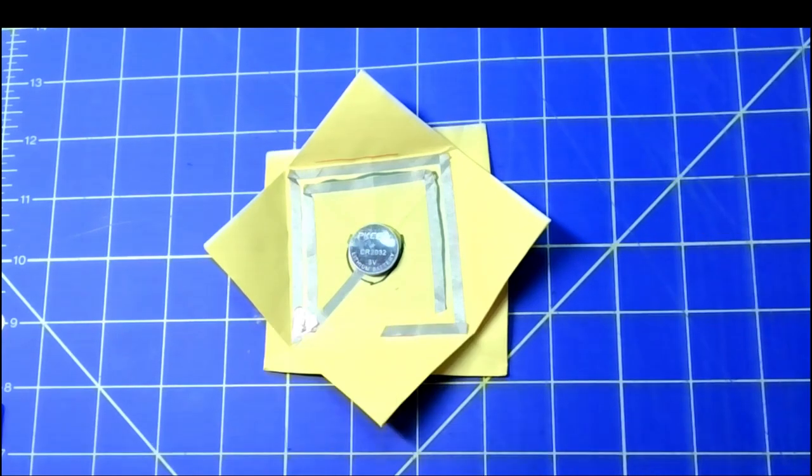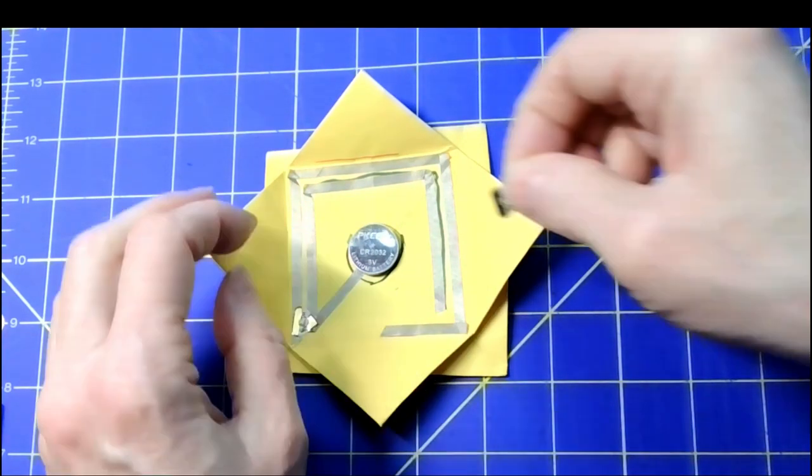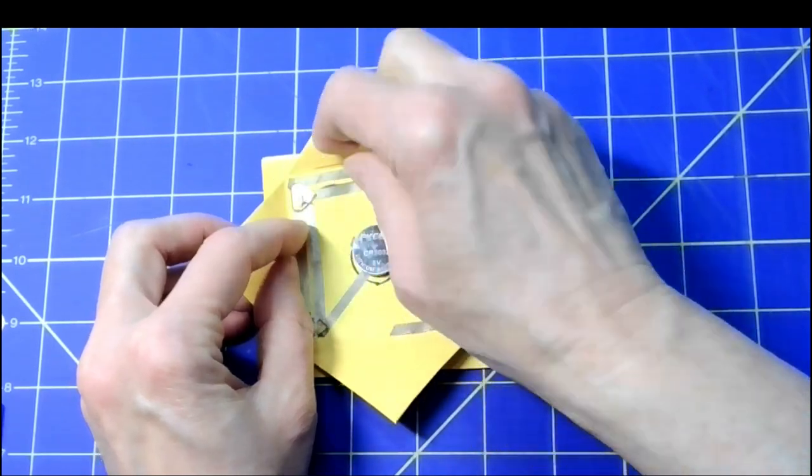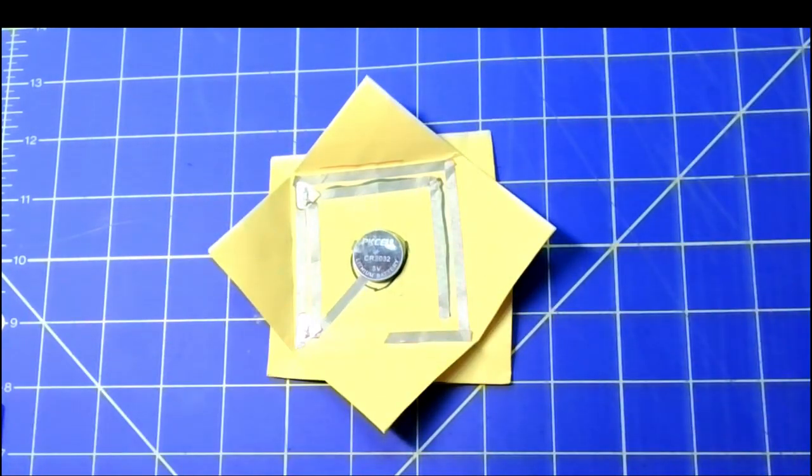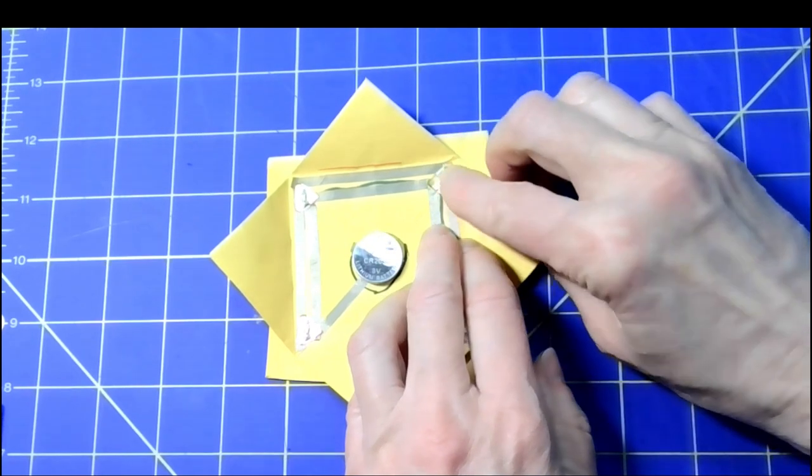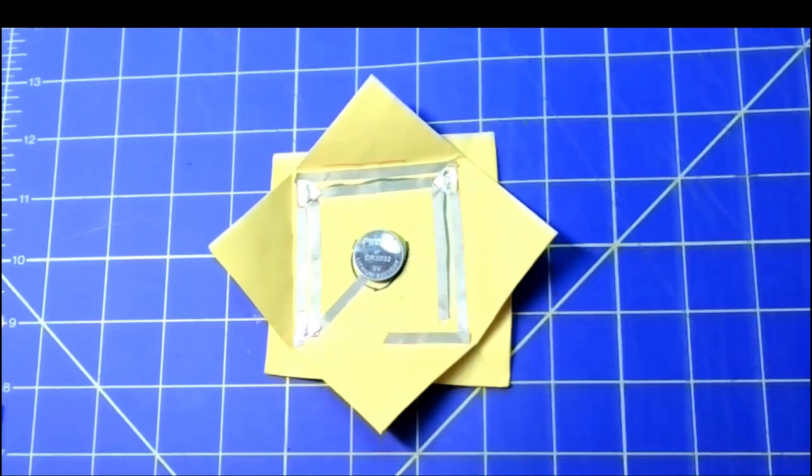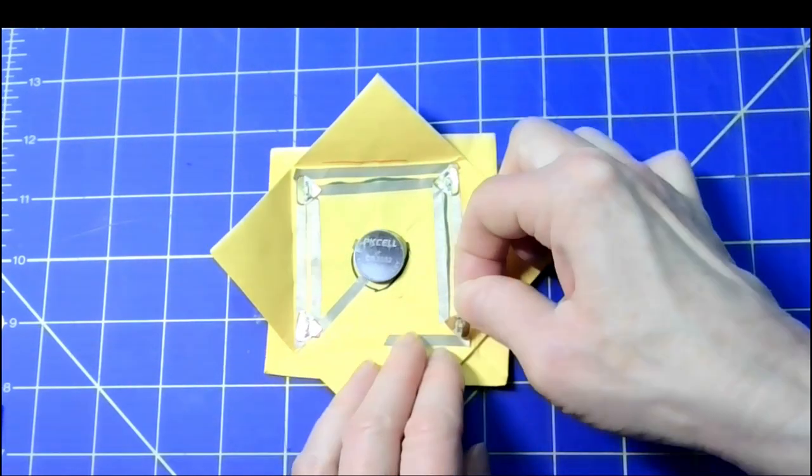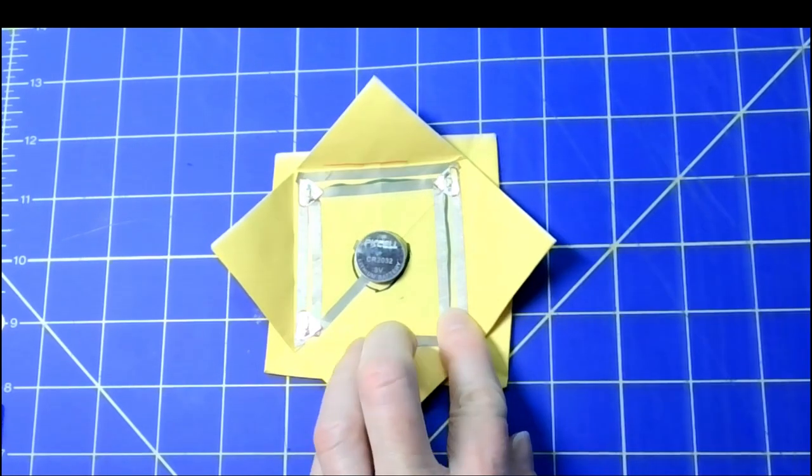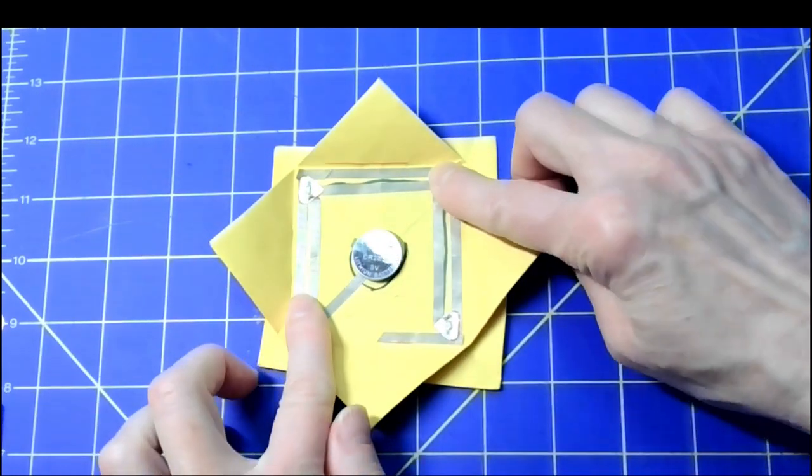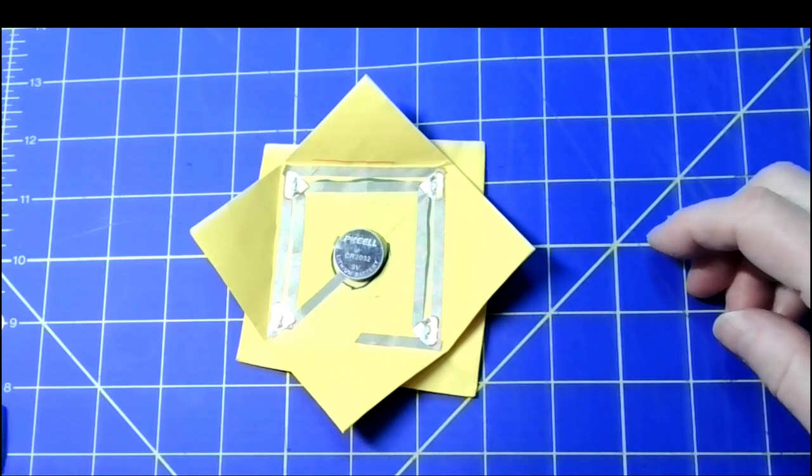And add the circuit sticker LEDs. Place one LED at each corner with the positive side of the LED running along the positive tape and the negative corner of the LED touching the negative tape. Put it down firmly and add extra tape if needed.